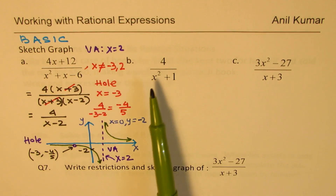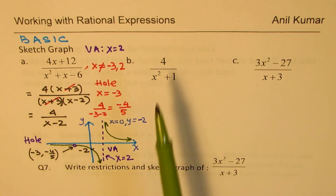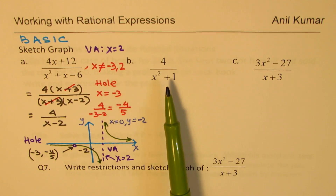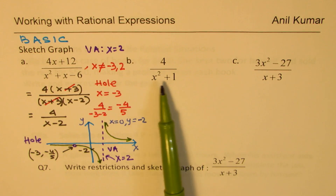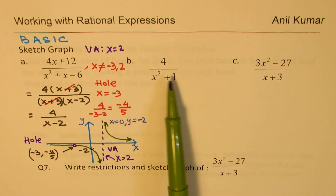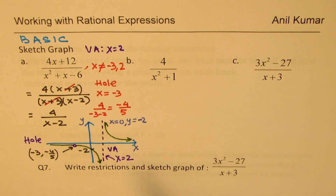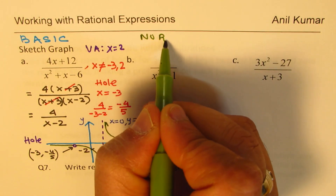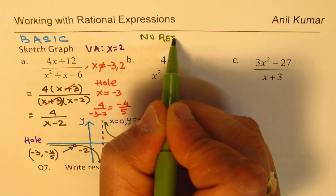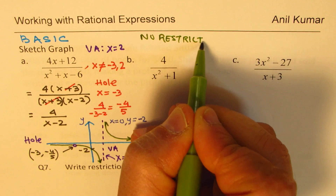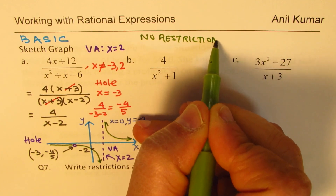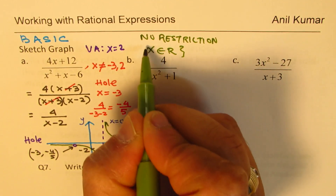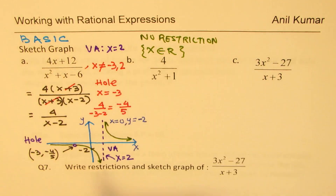The next example is 4 / (x² + 1). This is already a simplified version. Do we have any restriction here? No — there are no restrictions. x belongs to all real numbers, and that is the domain.